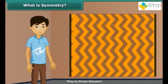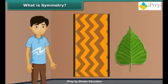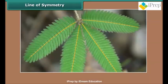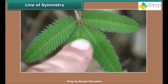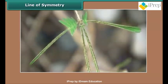Children, look at the rug. When you fold it, the left and right halves match each other — thus the rug is said to be symmetrical. Look at this leaf: on folding the leaf, its two halves match each other, so it is symmetrical too.